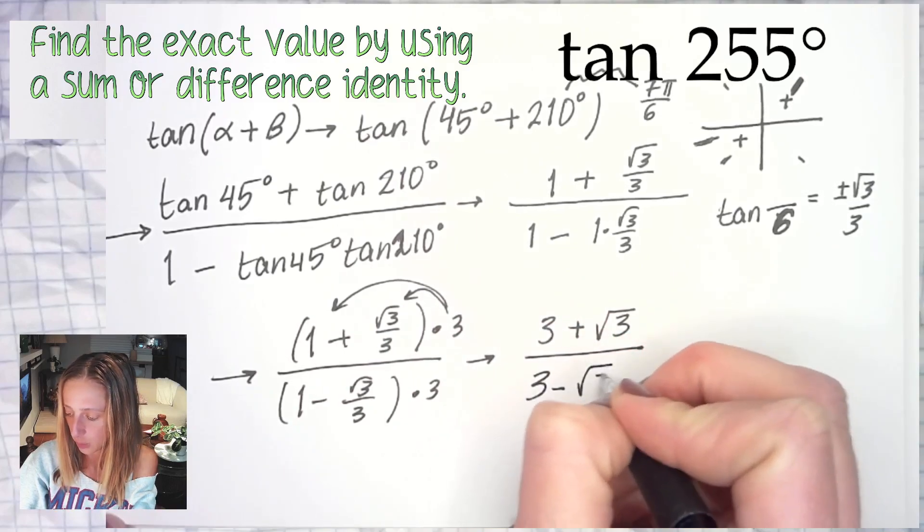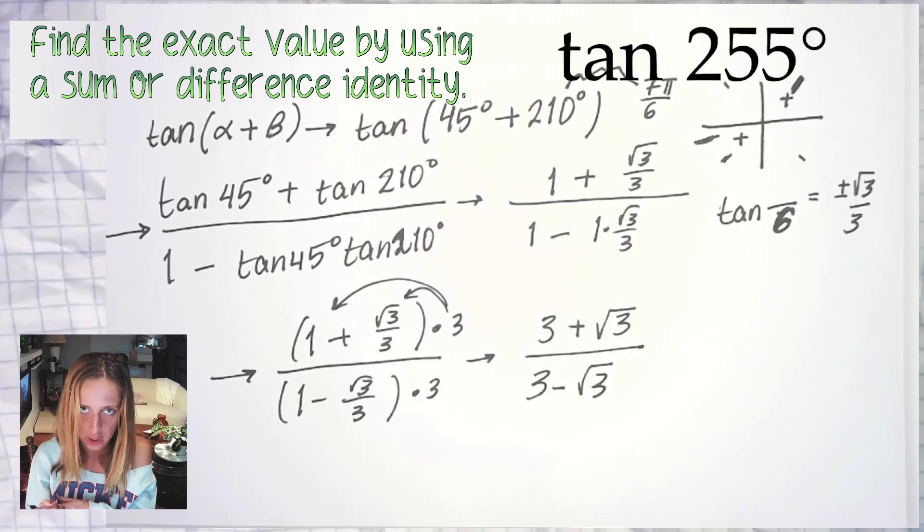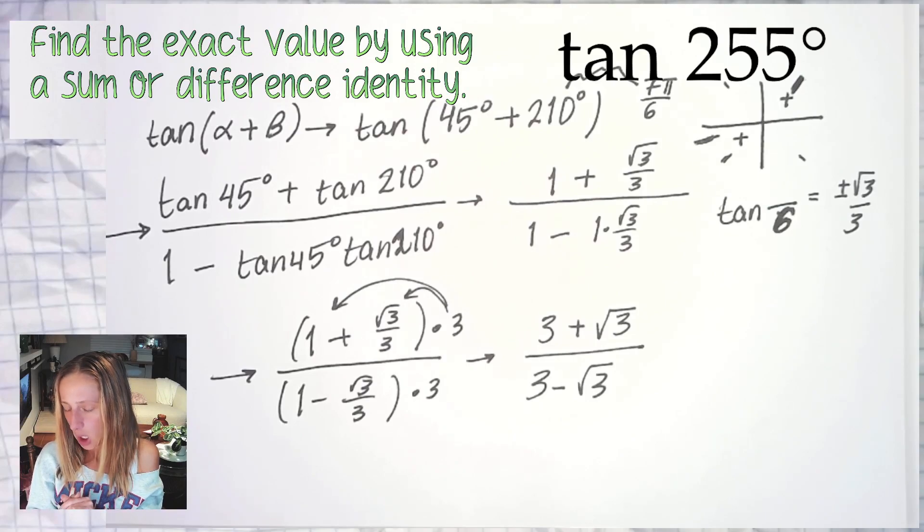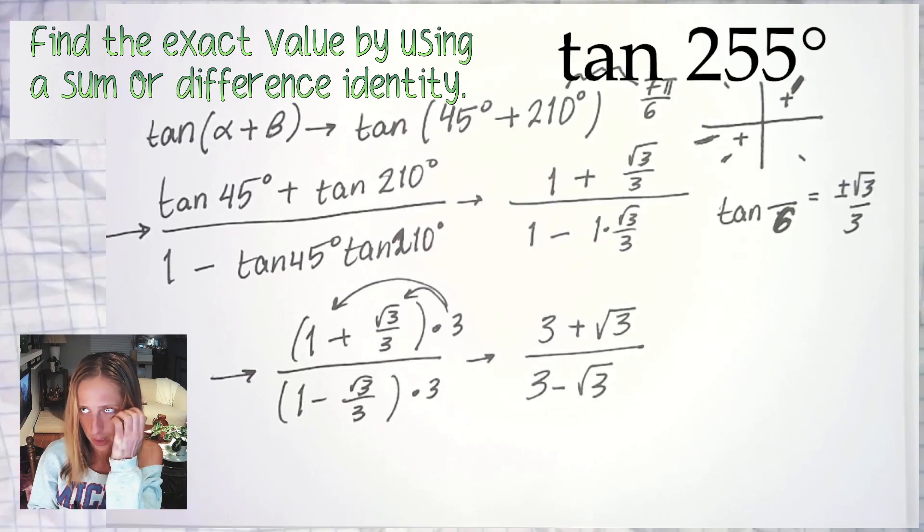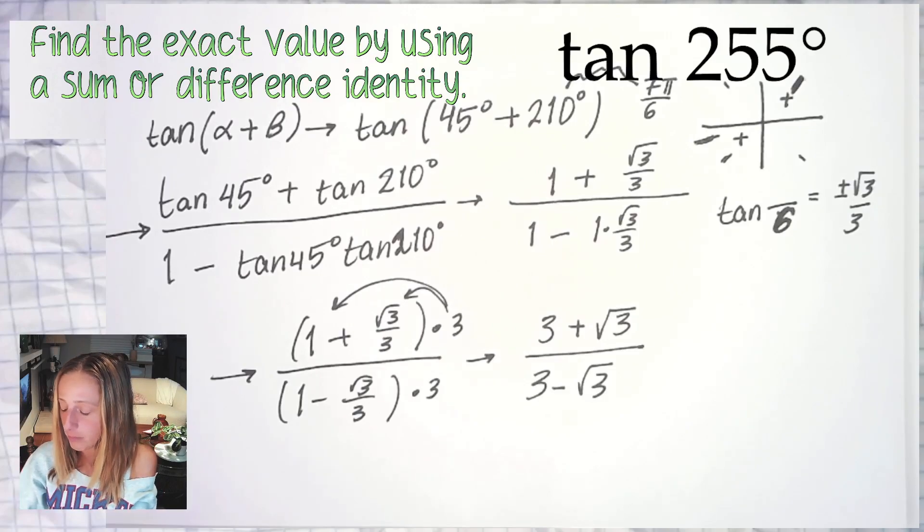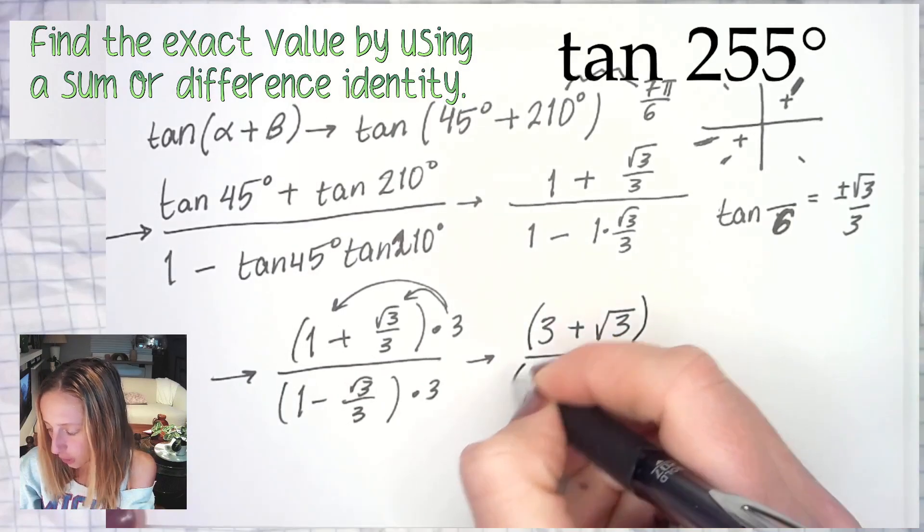Now this looks cute and all, but this is not rationalized. If you do this problem using, let's say, 300 minus 45 degrees, if you did it that way instead, you're going to get an answer more like √3 + 1 over √3 - 1, or negative 1 plus √3. It's not going to look like this, it's going to be a little awkward. So what do you do to know that you're right? Well, the sure way to do everything on a problem like this is of course to rationalize your denominator.